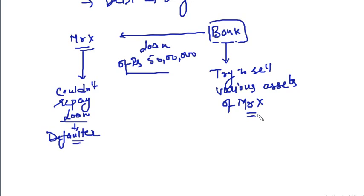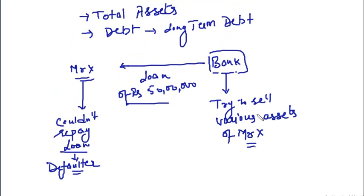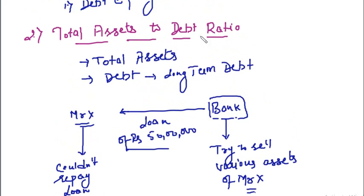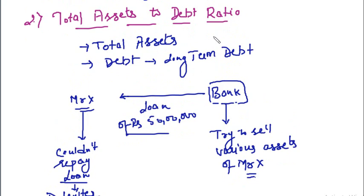The question is whether Mr. X has sufficient assets to recover a loan of 50 lakhs. Whether Mr. X has sufficient assets which can recover a loan of rupees 50 lakhs. For this, the bank will check the total assets to debt ratio — to assess what are the total assets of Mr. X against the debt, so that in case Mr. X is a defaulter, the bank can sell those assets and recover its money.